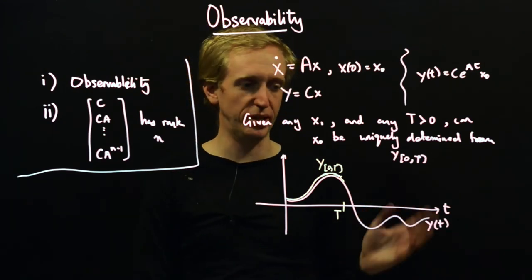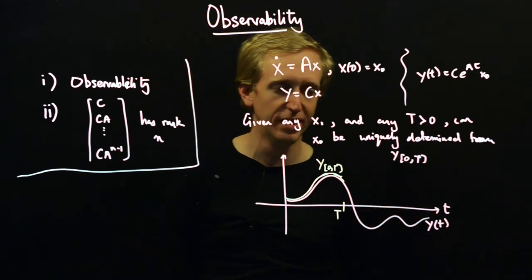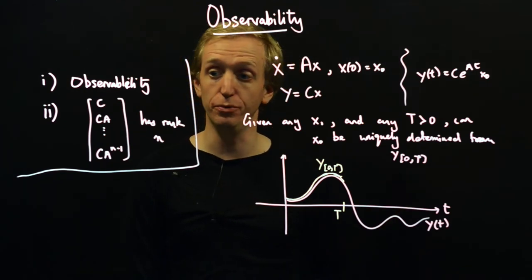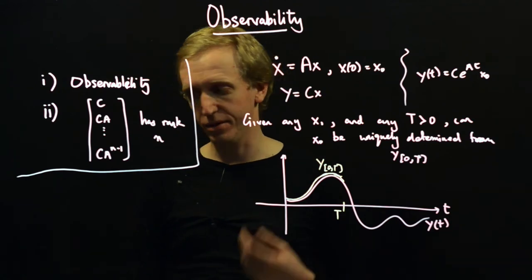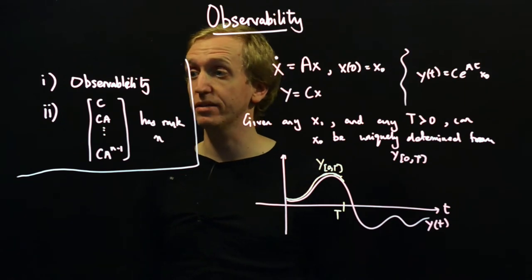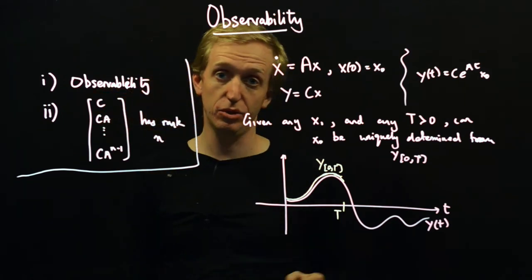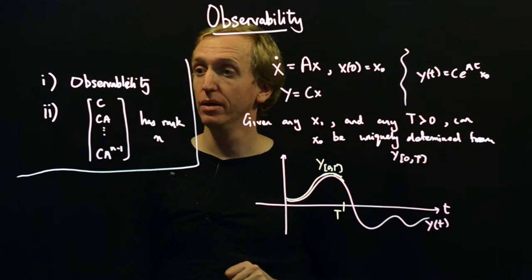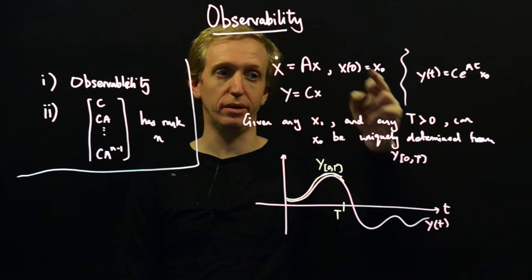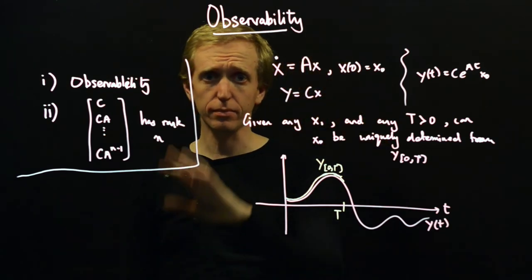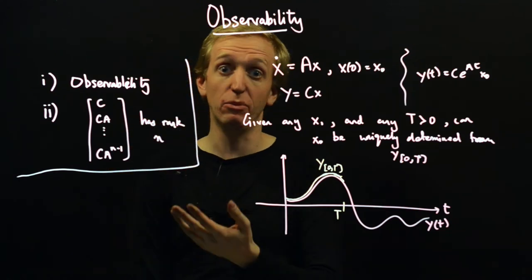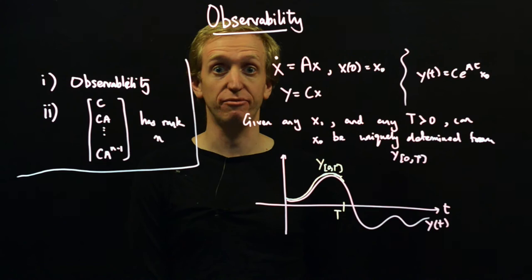But anyway, that's what it is, and it's the correct notion for what we intuitively want to do. And just like controllability, we can test for observability in a number of ways. So here I've just listed two equivalent conditions. So on the one hand, we have the thing that we want to know. We want to know whether our system is observable or not. And then we have a bunch of equivalent statements, some of which hopefully are easy to test for.